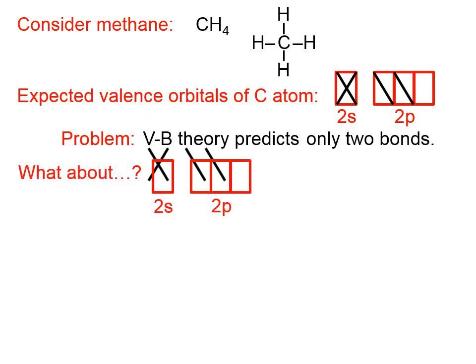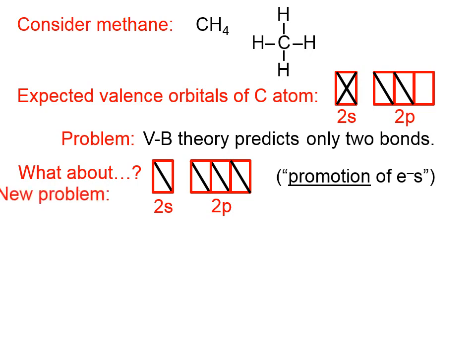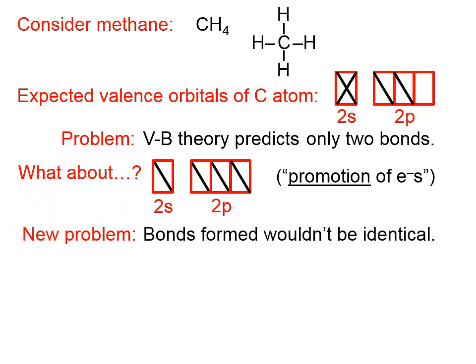Suppose we took one of those 2S electrons and moved it up and put it in that empty spot in the 2P orbitals. This is called promotion of electrons. We've now solved the problem of carbon being able to form four bonds because now it can, because it has four unpaired electrons. But this leads us to a new problem, and that new problem is that the bonds that are formed wouldn't be exactly the same if we have a 2S orbital in carbon overlapping with the 1S orbital in hydrogen versus a 2P orbital in carbon overlapping with the 1S orbital in hydrogen. And again, this violates experimental evidence that suggests that every one of these four bonds in methane is exactly the same as every other. So here's our new solution.